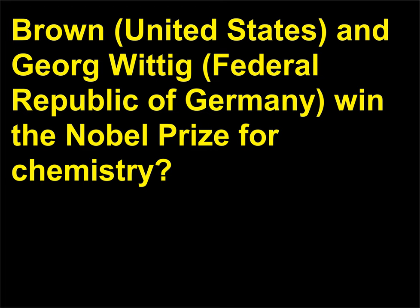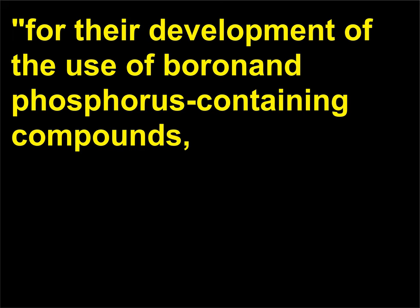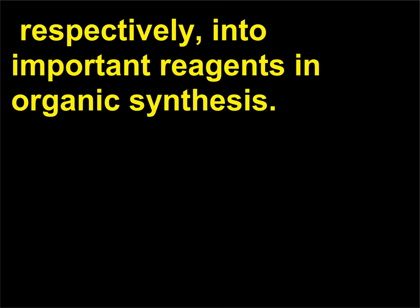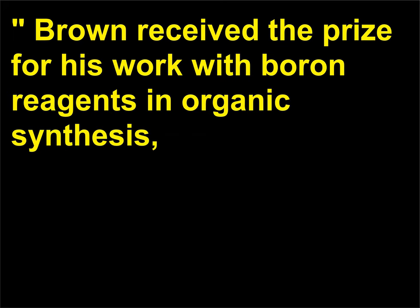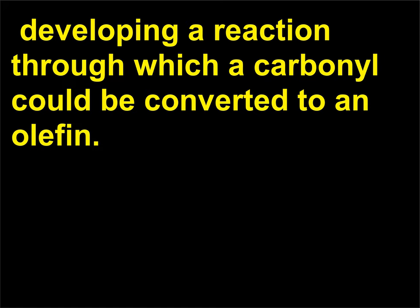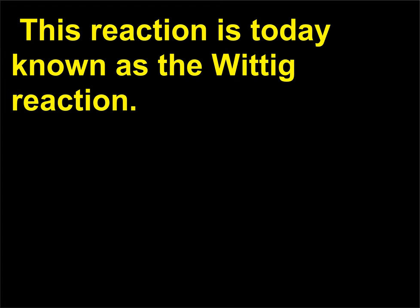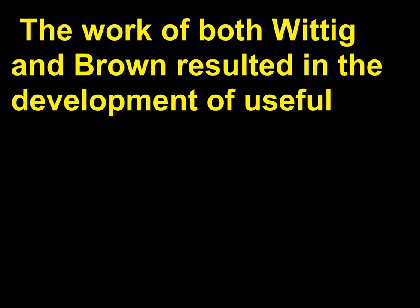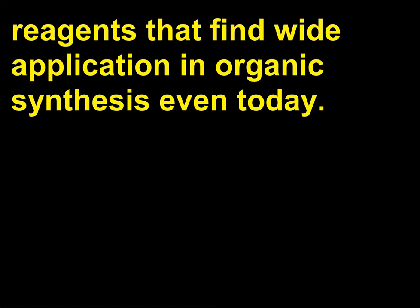For their development of the use of boron and phosphorus-containing compounds, respectively, into important reagents in organic synthesis. Brown received the prize for his work with boron reagents in organic synthesis, which also led to the development of organoborons as a class of molecules. Wittig worked with phosphorus, developing a reaction through which a carbonyl could be converted to an olefin — this reaction is today known as the Wittig reaction. The work of both Wittig and Brown resulted in the development of useful reagents that find wide application in organic synthesis even today.